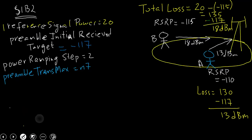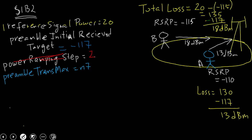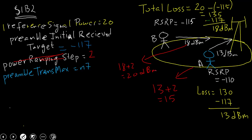If eNodeB has not responded after four subframes, both users will increase their transmit power by the Power Ramping Step value, which is 2 dB. So in the second attempt, User B transmits at 15 dBm and User A at 20 dBm. If eNodeB still does not respond, they keep ramping up by 2 dB each time. The Preamble Trans Max, set to 7, limits the total number of attempts. If eNodeB does not respond after 7 attempts, the UE gives up on that cell and moves to another cell.